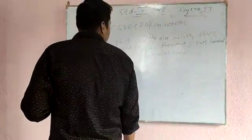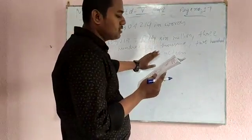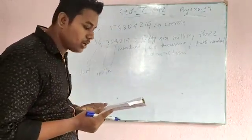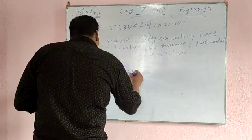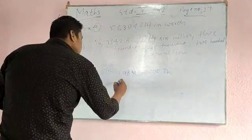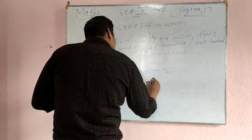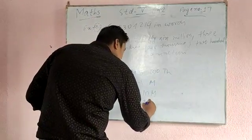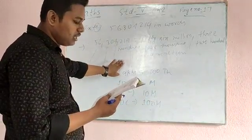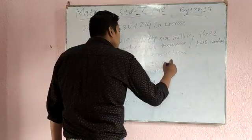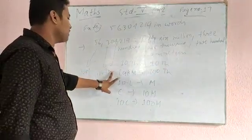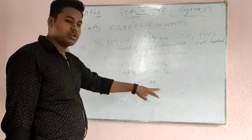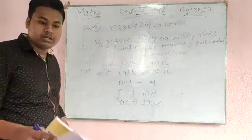Please don't get confused between the Indian system and the international system. Till 10,000 both are the same. It changes from lakhs onward: lakh becomes 100,000 in the international system; 10 lakh becomes 1 million; crore becomes 10 million; and 10 crore becomes 100 million in the international system.